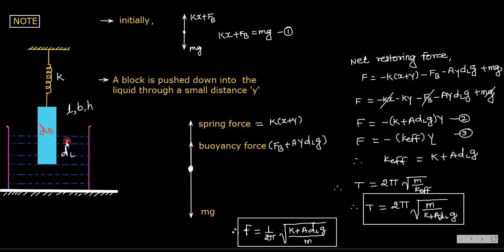kx plus fb — because this water will exert one buoyant force on this, which is in the upward direction, that's why fb is added here. kx is the restoring force and x is the displacement from its mean position. In the downward direction you have weight, that is mg. Therefore, kx plus fb is equal to mg.